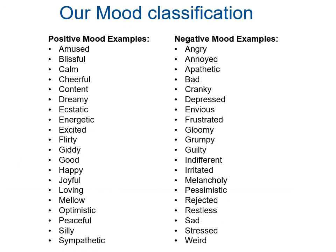We are classifying the moods of a person as positives and negatives. The positive moods include: amused, blissful, calm, cheerful, content, dreamy, ecstatic, energetic, excited, flirty, giddy, good, happy, joyful, loving, mellow, optimistic, peaceful, silly, and sympathetic. The negative moods include: angry, annoyed, apathetic, bad, cranky, depressed, envious, frustrated, gloomy, grumpy, guilty, indifferent, irritated, melancholy, pessimistic, rejected, restless, sad, stressed, and weird.